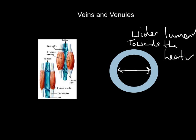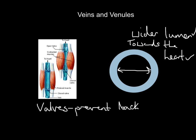A key feature of veins is how they always carry blood back to the heart. In the diagram you can see pocket valves. The blood is flowing toward the heart, but gravity is working against it. These valves are called pocket valves because they are shaped like the pockets in your jeans — they prevent blood from flowing in the wrong direction. You don't get these in arteries or capillaries. Veins have valves to prevent backflow of blood.